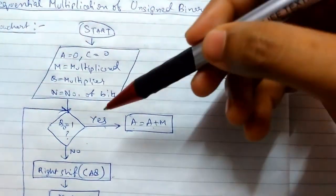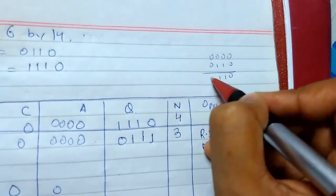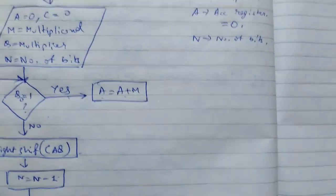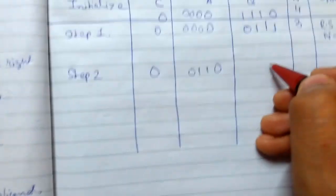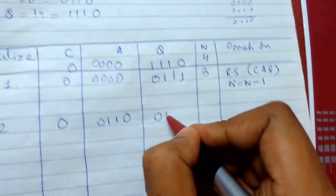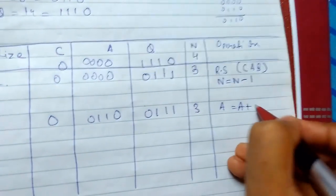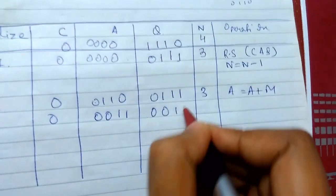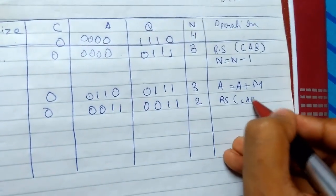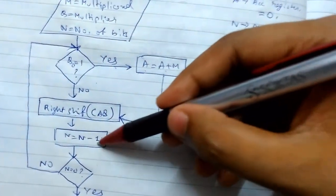Step 2: C is still 0. Now Q0 is 1, so we perform A = A + M. A is 0000 and M is 0110, so A becomes 0110. Then we right shift: C A Q becomes 0 0011, shifting in the carry 0. We've done right shift C A Q and N = N - 1.